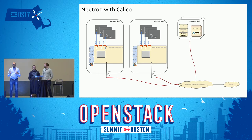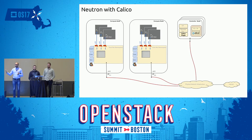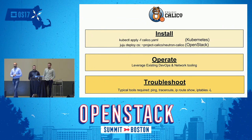For isolation, Calico uses policy. In Kubernetes, it uses Kubernetes network policy — the team behind Project Calico helped develop the network policy implementation for Kubernetes, so Kubernetes network policy mirrors Calico's policy infrastructure almost identically. In the case of Neutron, because Neutron has artifacts like security groups which are less dynamic, Calico uses a concept called profiles — mapping security groups into profiles.